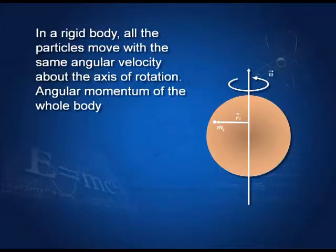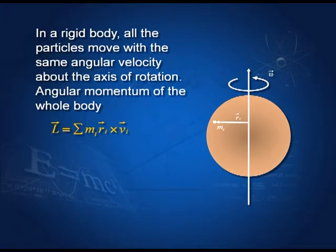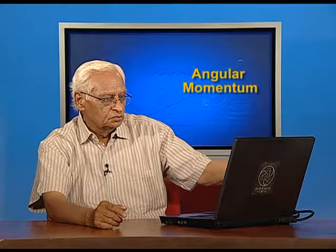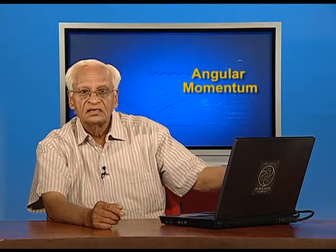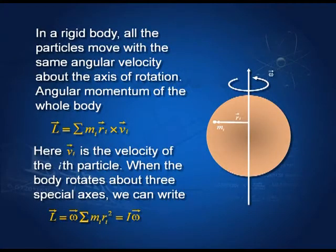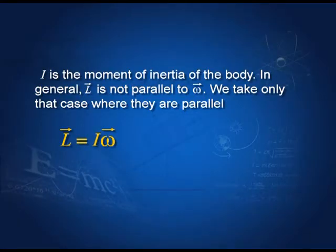In a rigid body it is very simple. For a particle i, rᵢ is its distance from the axis of rotation, and we write the angular momentum as mᵢrᵢ × vᵢ, where vᵢ is the velocity of the ith particle. Substituting vᵢ = rᵢω, we get ω times mᵢrᵢ², which is nothing but the moment of inertia. Therefore the angular momentum is moment of inertia times angular velocity. In general, angular momentum is not parallel to ω, but we assume they are parallel at this stage.